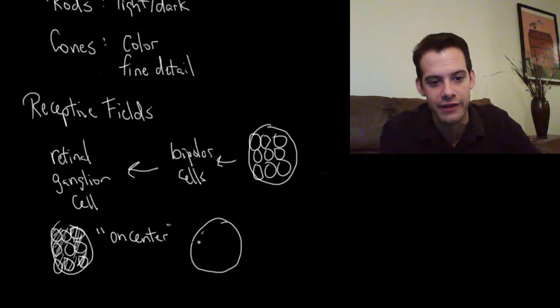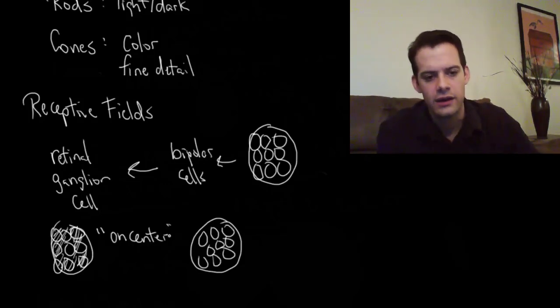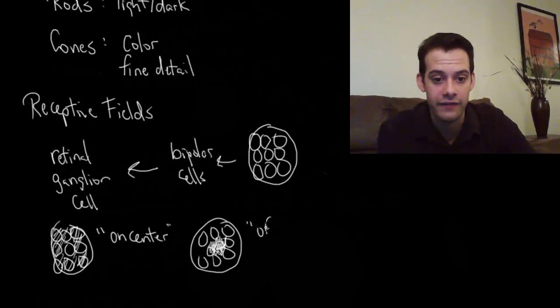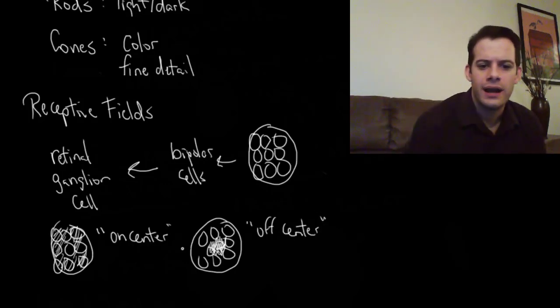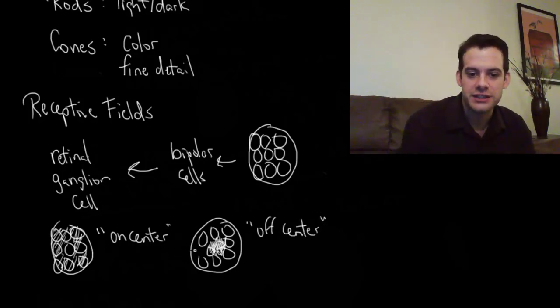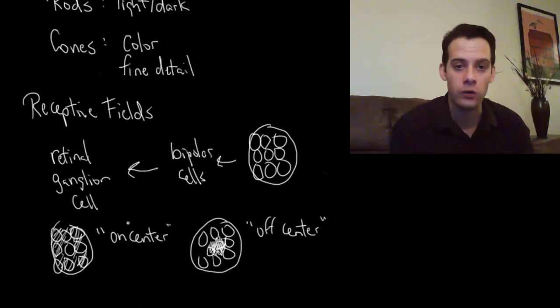In contrast we could have a receptive field where it responds most intensely when it's dark in the center of the receptive field but light on the edges. That would be an off-center receptive field. What happens is these situations actually cause the retinal ganglion cell to fire more intensely than all light or all dark situations.